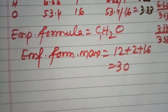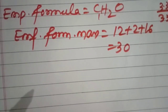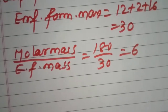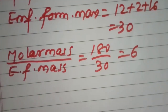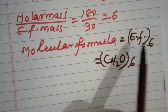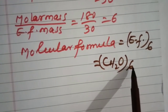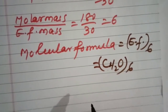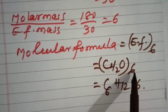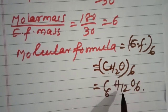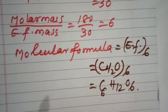The empirical formula mass is 30 u. The ratio of molar mass to empirical formula mass is 180 divided by 30, which equals 6. The molecular formula is therefore the empirical formula multiplied by 6: CH2O × 6. Multiplying through — 1 × 6 = 6, 2 × 6 = 12, 1 × 6 = 6 — gives the exact molecular formula C6H12O6. So the molecular formula of glucose is C6H12O6. Thank you.